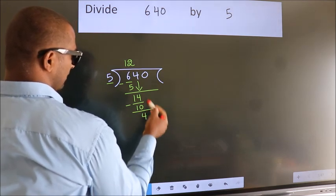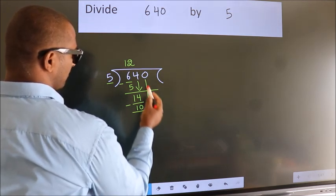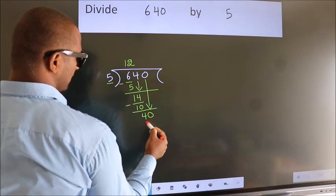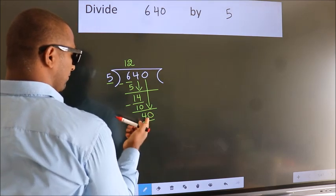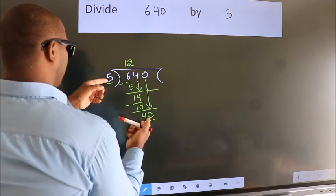After this, bring down the beside number. So, 0 down. So, 40. When do we get 40 in 5 table?